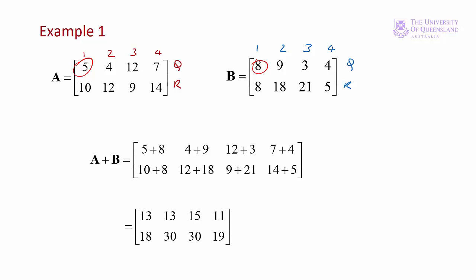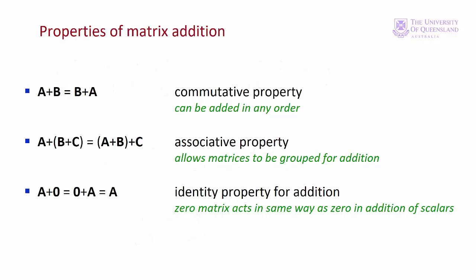Next we'll go through the properties of matrix addition. We need to take care with matrices as some of the rules associated with them are different from scalar algebra. In the case of addition, the properties are similar. We have the commutative property A plus B is equal to B plus A. The associative property A plus B plus C in brackets is equal to A plus B in brackets plus C. And if we add a null matrix to A, we end up with A. So we're adding 0 to each of the elements.